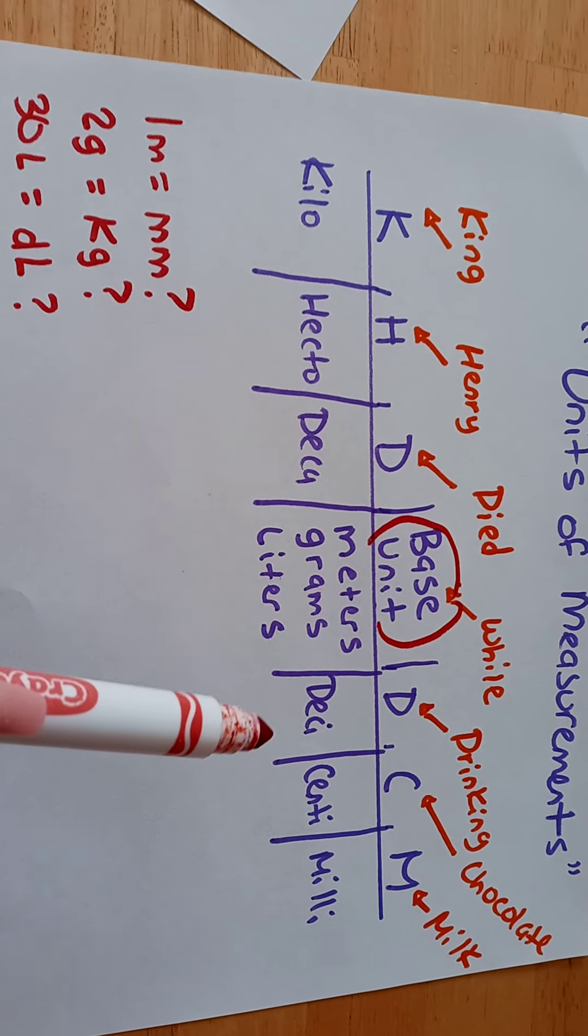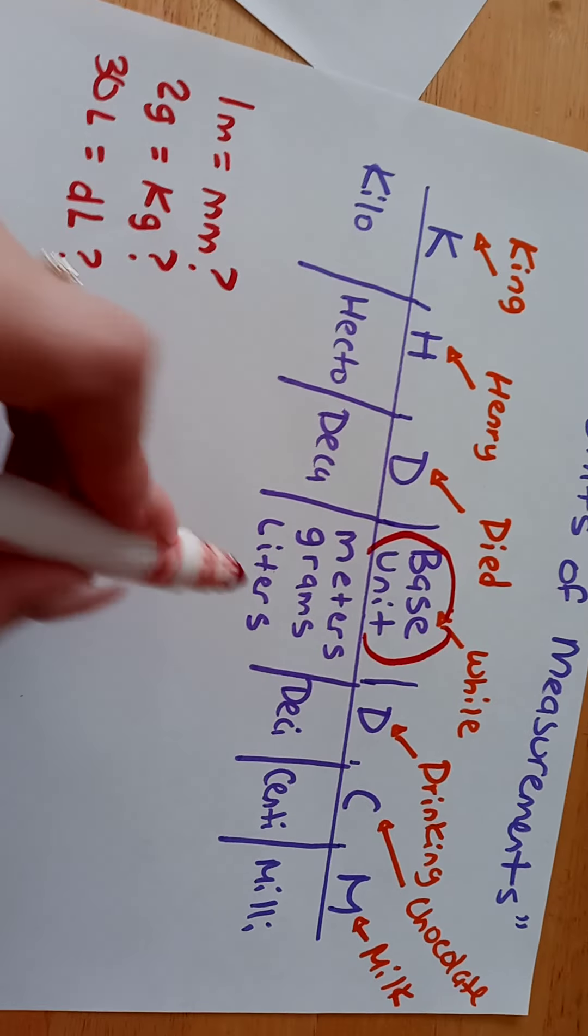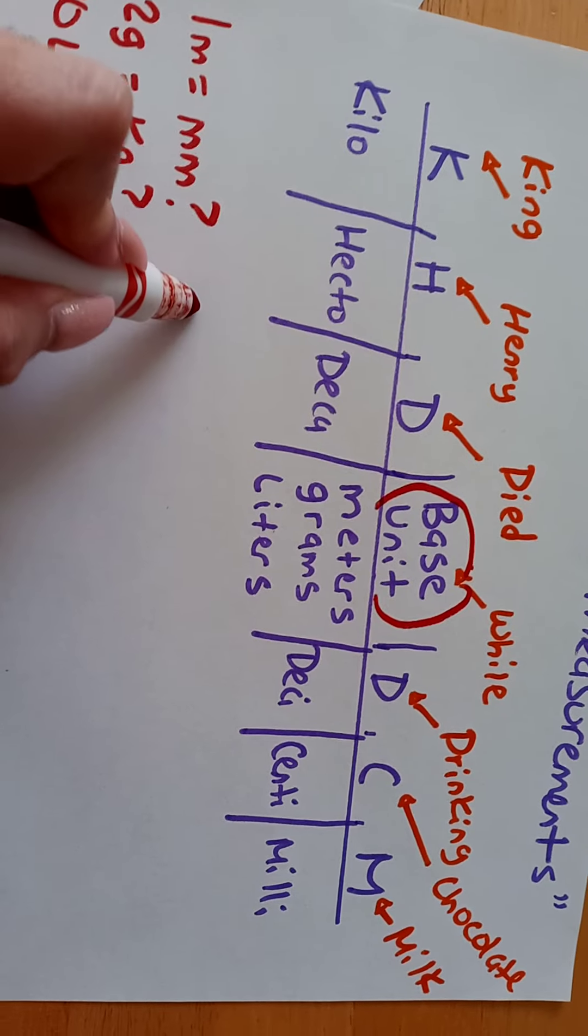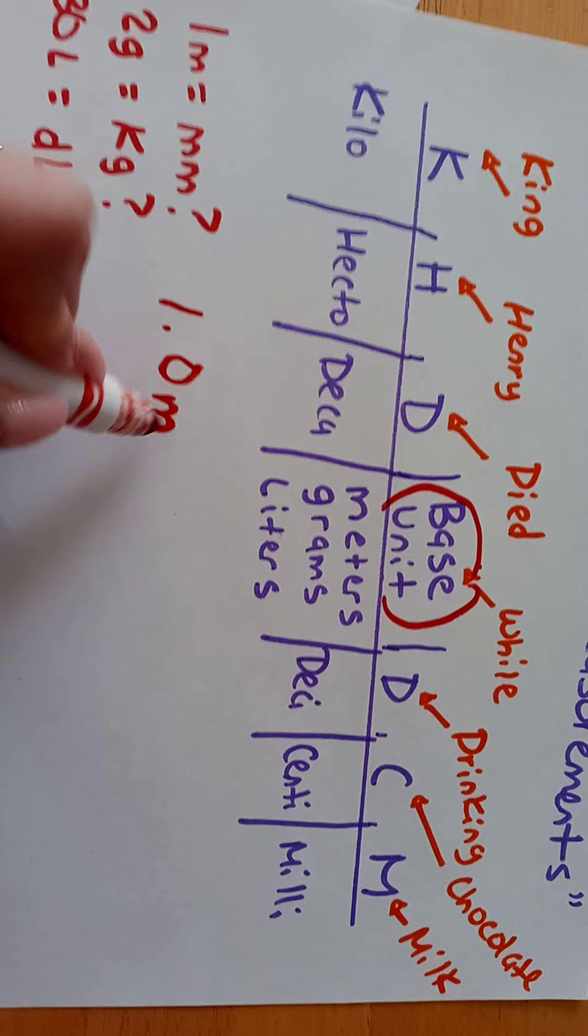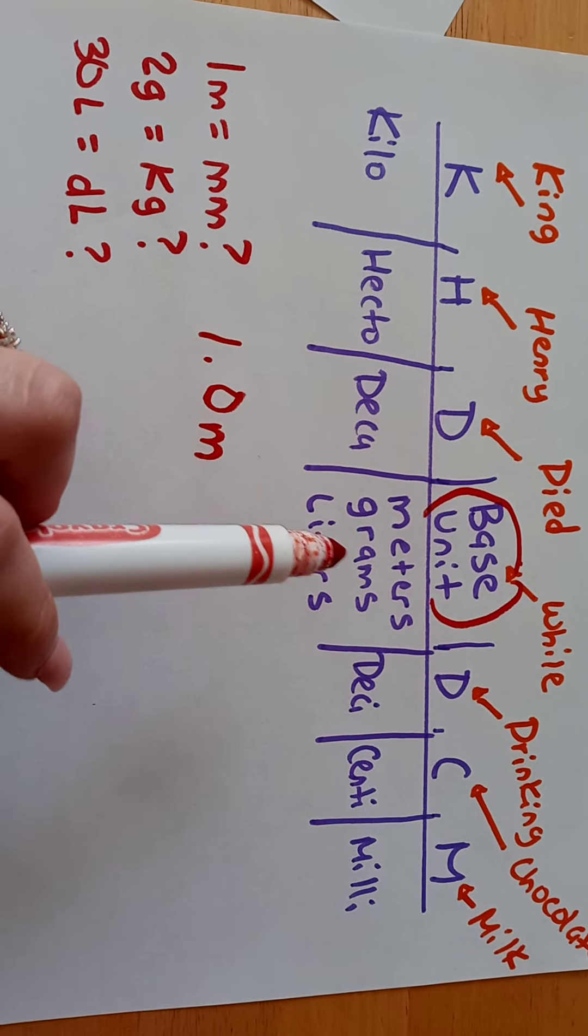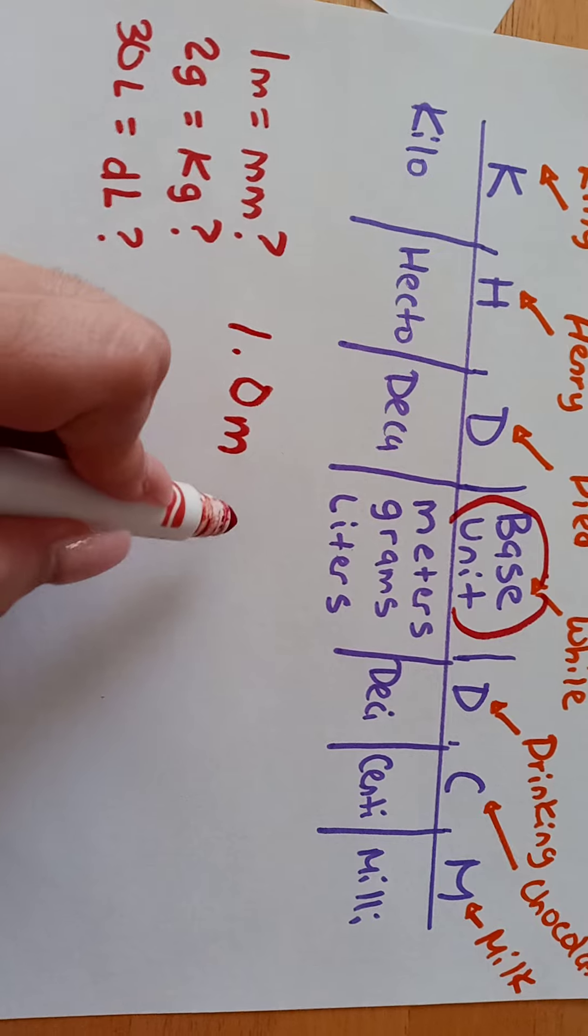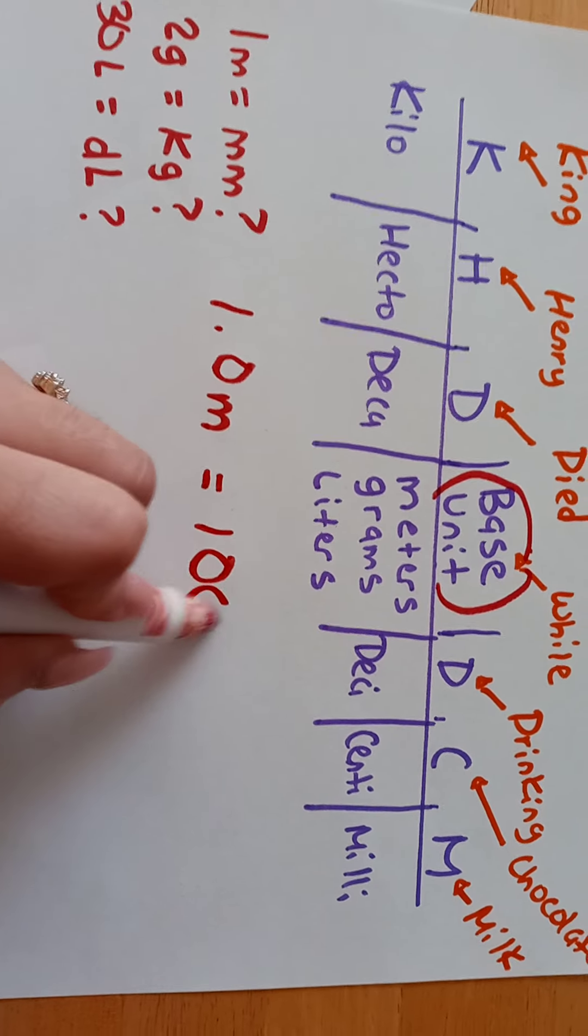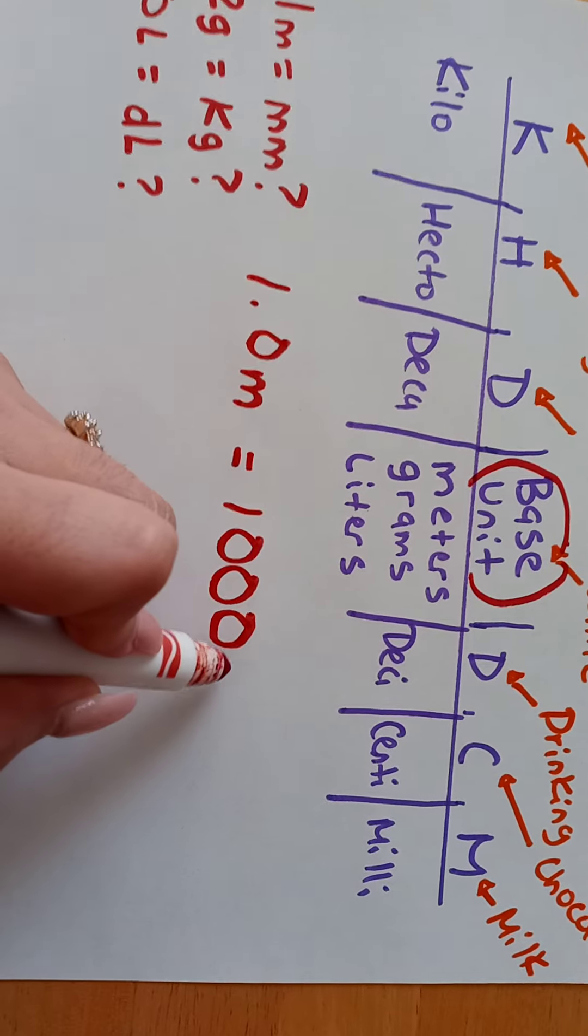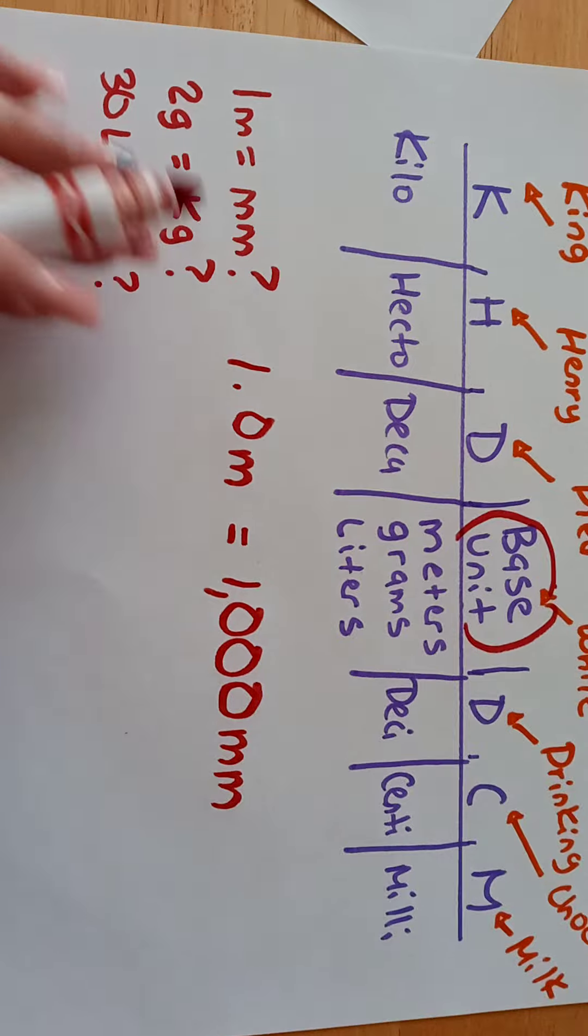We will move it 1, 2, 3 units to the right. So 1 meter, remember we're moving it 3 units to the right, the decimal place, is equal to 1, 2, 3, and then it's millimeters, is equal to 1,000 millimeters.